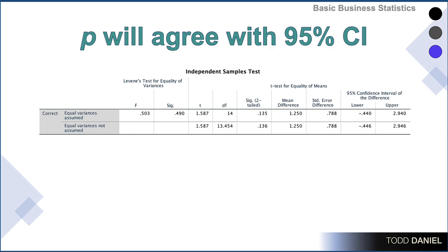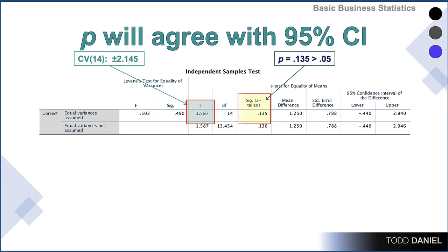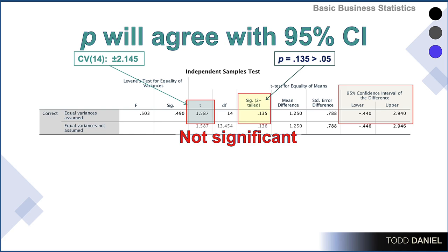Here is some output from SPSS for an independent samples t-test. Before we began, we looked up the critical value for 14 degrees of freedom, which was positive or negative 2.145. However, the test value was 1.587 — not in the critical region, does not exceed the critical value. The p-value is 0.135, or 13 cents, which is more than a nickel, greater than 0.05. The 95% confidence interval around the mean difference runs from negative 0.44 to positive 2.9 — one is negative, the other positive, so it crosses zero. All three indicators tell us the same thing: this test is non-significant.